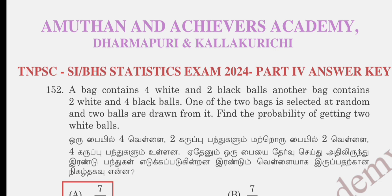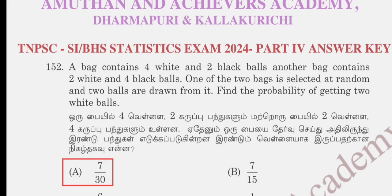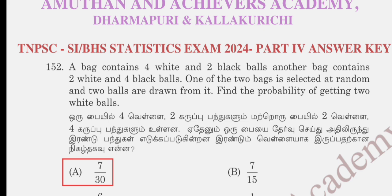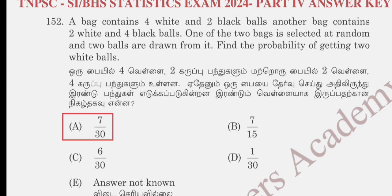You will be able to check the questions and answers. Question: A bag contains 4 white and 2 black balls. Another bag contains 2 white and 4 black balls. One of the 2 bags is selected at random and 2 balls are drawn from it. Find the probability of getting 2 white balls. Option A: 7/30, B: 7/15, C: 6/30, D: 1/30. The correct answer is 7/30, option A.